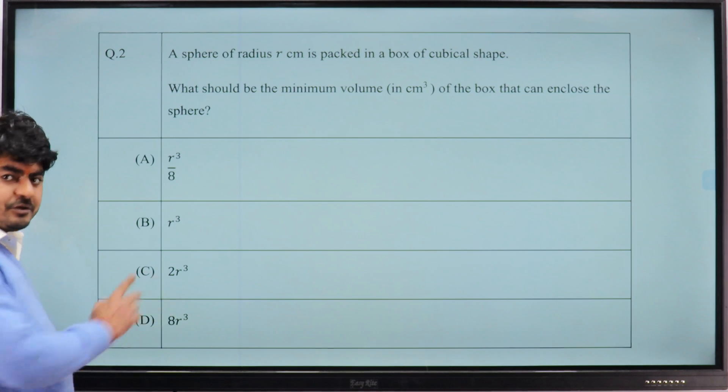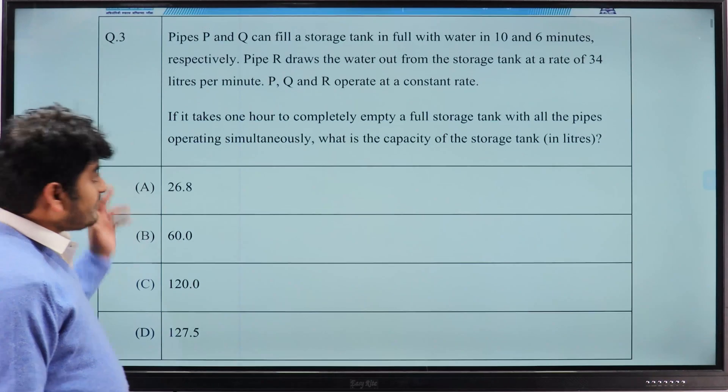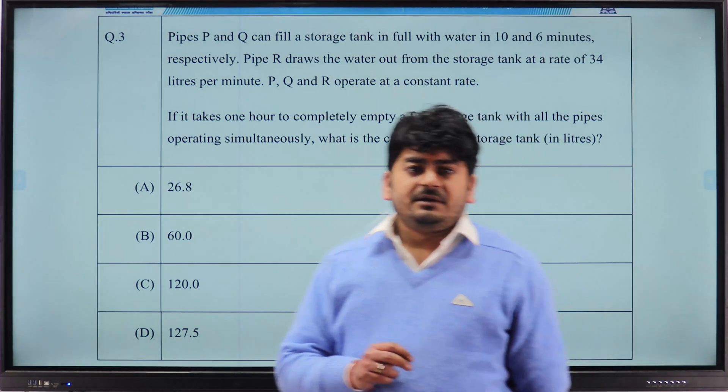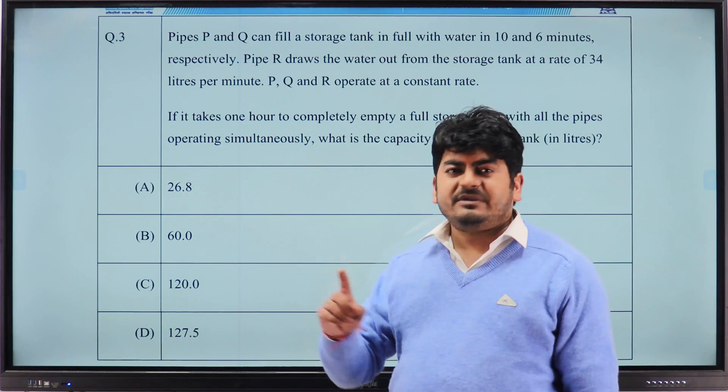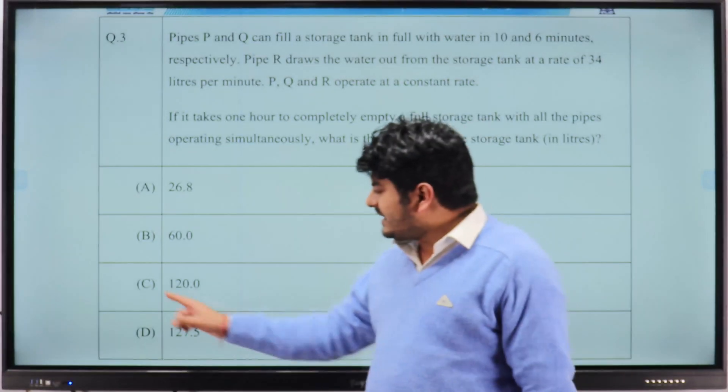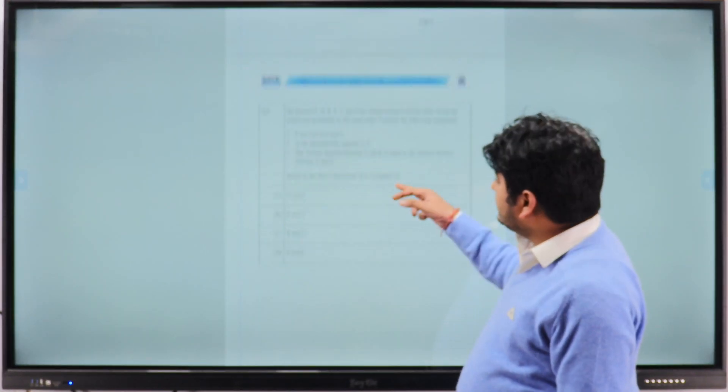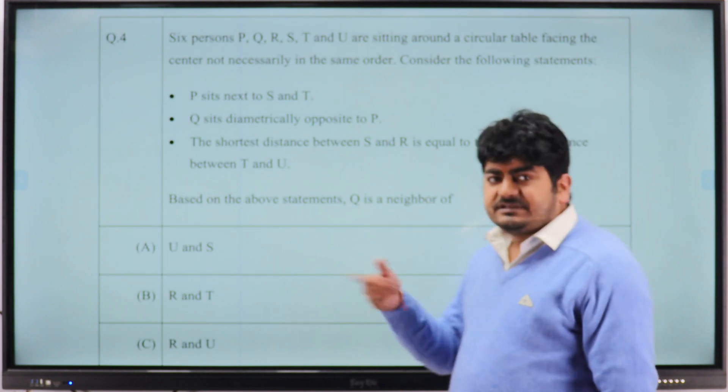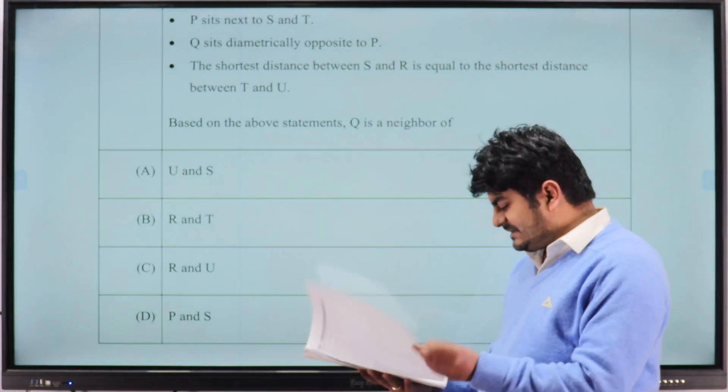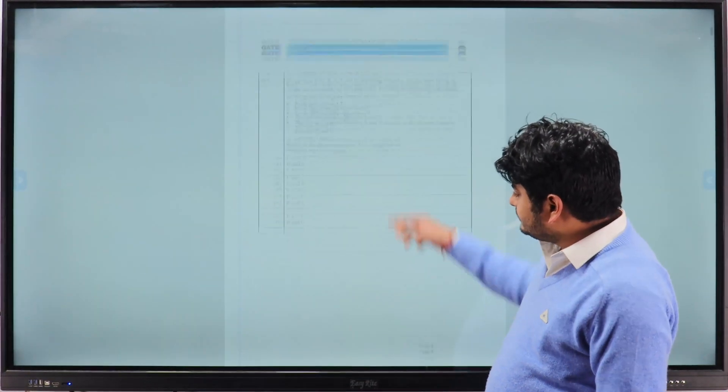Many people think that time and work questions don't come in GATE, which is a wrong concept. They do come. Pipe and cistern and time and work use the same approach. For this particular question, correct answer is C. Six people sitting on a circular table - who will be the neighbor of Q? The answer is R and U will be the neighbors of Q, option C.